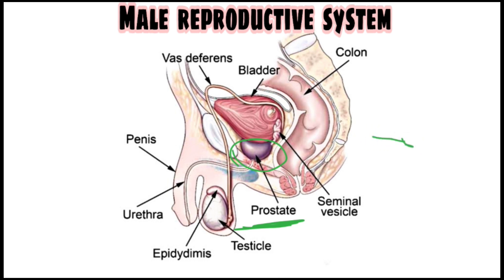The prostate is the place where sperm is mixed with a white alkaline material. This material is mixed with the sperm so that the sperm can last long and withstand the acidic nature of the vagina for a longer time.